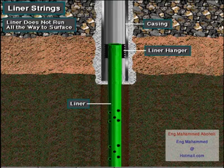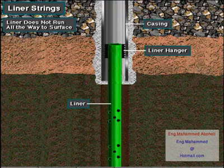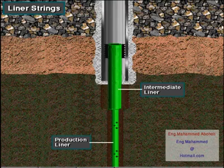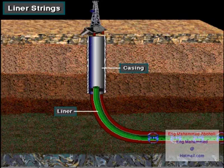Instead, the casing crew hangs the liner from the bottom of a previously run casing or liner string using a special piece of equipment called a liner hanger. In this configuration there can be an intermediate liner and a production liner. Using liners saves money since they do not extend to the surface.